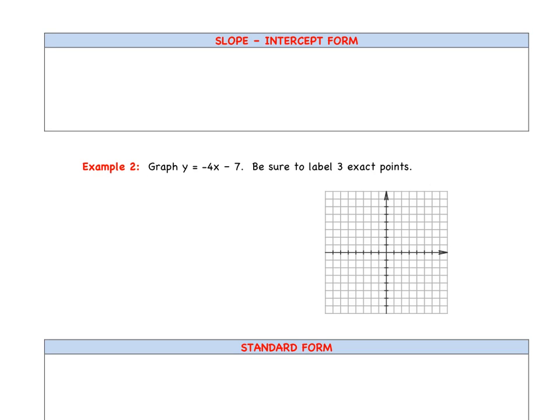Now we're going to get into graphing equations — graphing lines. These two should be familiar to you. The first form we're going to graph in is slope-intercept form, which is probably the one you're most familiar with. Slope-intercept form is y equals mx plus b, or in function notation, f of x equals mx plus b.